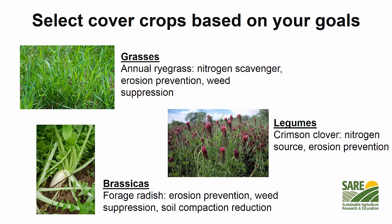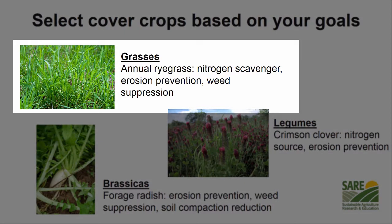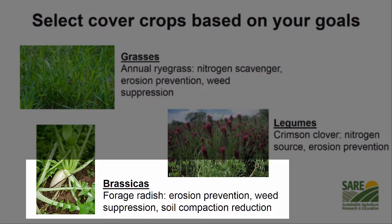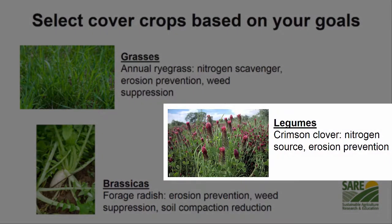Similar to most agronomic crops, cover crops typically fall into three general categories, each of which have different features and functions. Grasses like annual rye grass acquire great amounts of biomass and are known for scavenging nitrogen, preventing erosion, and suppressing weeds. Brassicas and mustards like radish are broad-leaved and are known to prevent erosion but also reduce soil compaction and suppress weeds. And finally, legume crops like crimson clover are also broad-leaved but are mainly recognized for their ability to increase soil nitrogen.